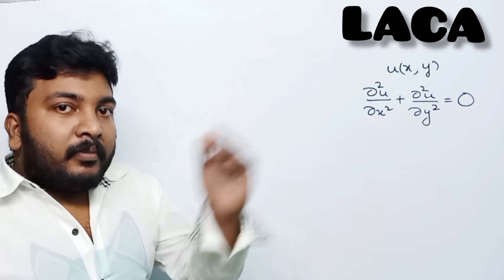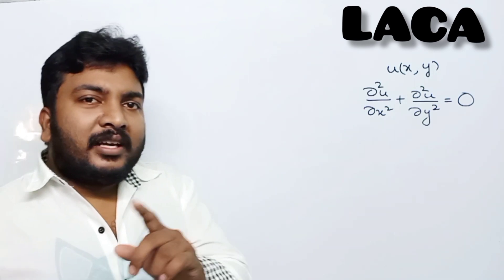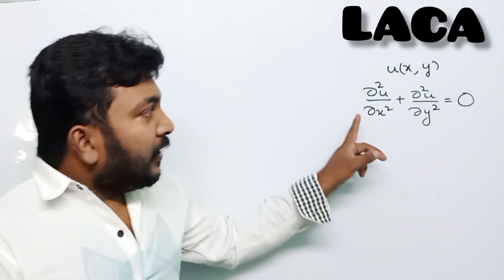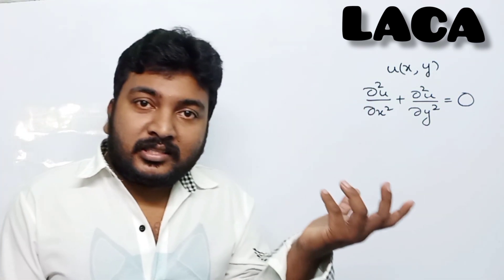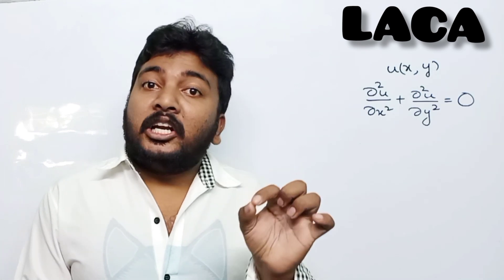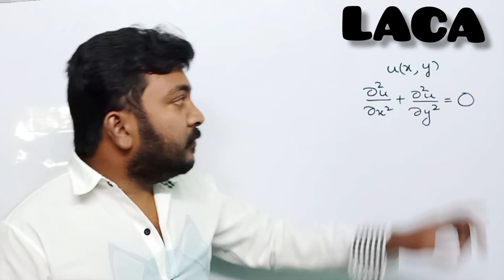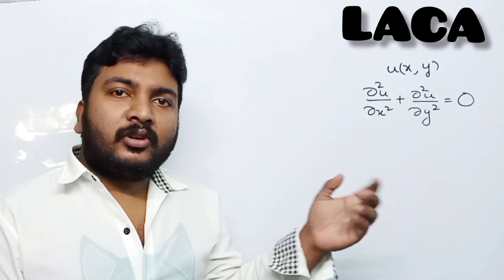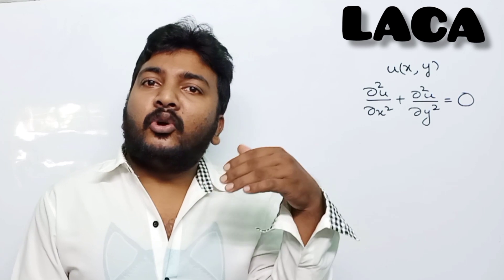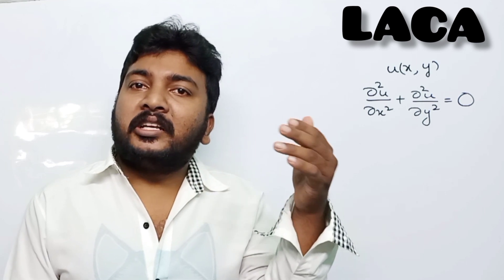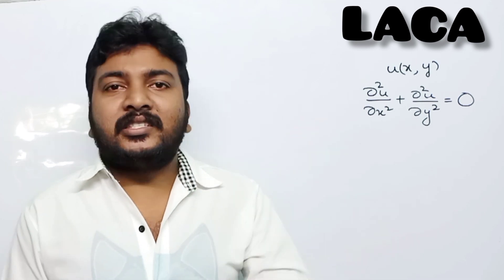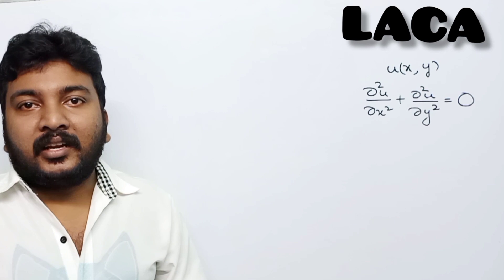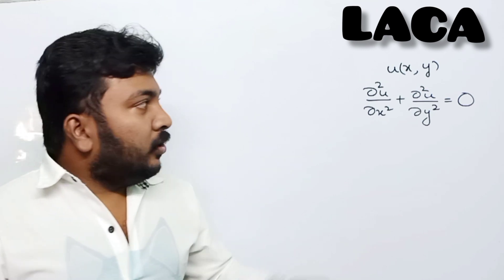This is an atom basic video. Now, ∂²u/∂x² must exist and be continuous. Similarly, ∂²u/∂y² must exist. That means the second order partial derivatives exist and are continuous.